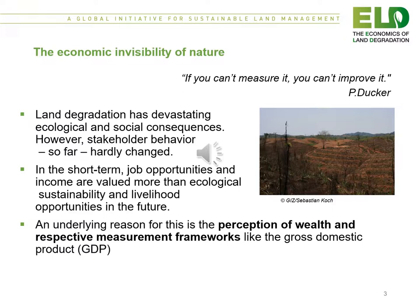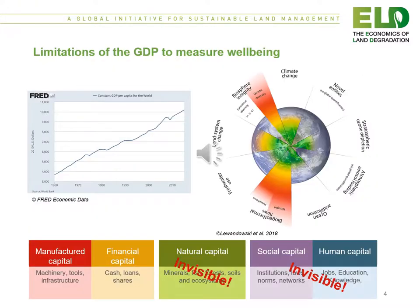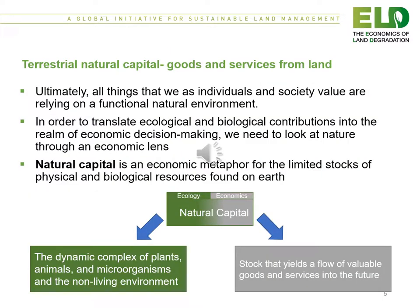An underlying reason for this is the perception of wealth and respective measurement frameworks like the gross domestic product, which tends to completely ignore things like natural capital. Part of the problem is that countries still use GDP to measure well-being, and as you can see from this slide, that tends to focus on manufactured capital and financial capital but ignores natural capital, social capital, and human capital. Consideration of natural capital is now gaining momentum.